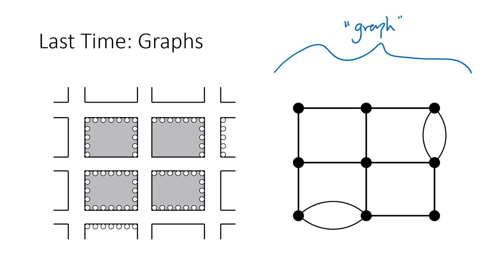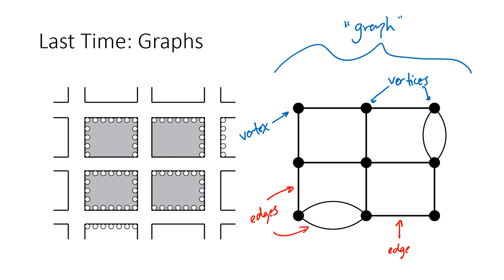What we have are these dots, and each of these dots is a vertex. Together they are called vertices — that's the plural. The connections between the vertices are called edges. In this example the vertices represent the intersections of our streets, and the edges represent the rows of parking meters that we're checking.